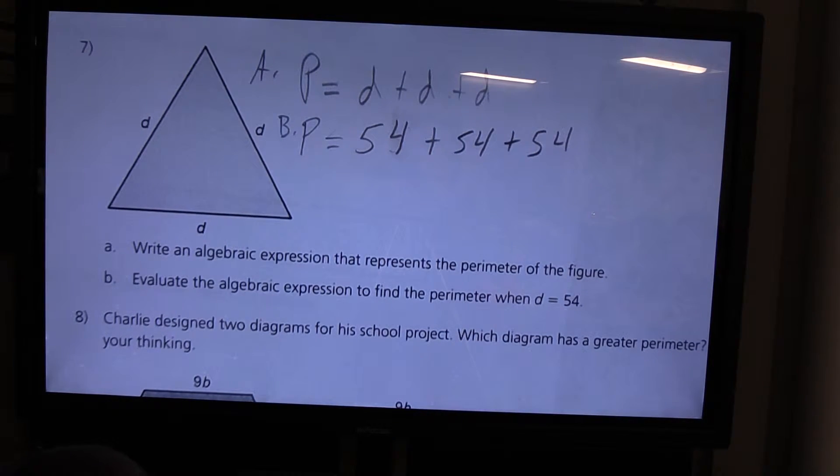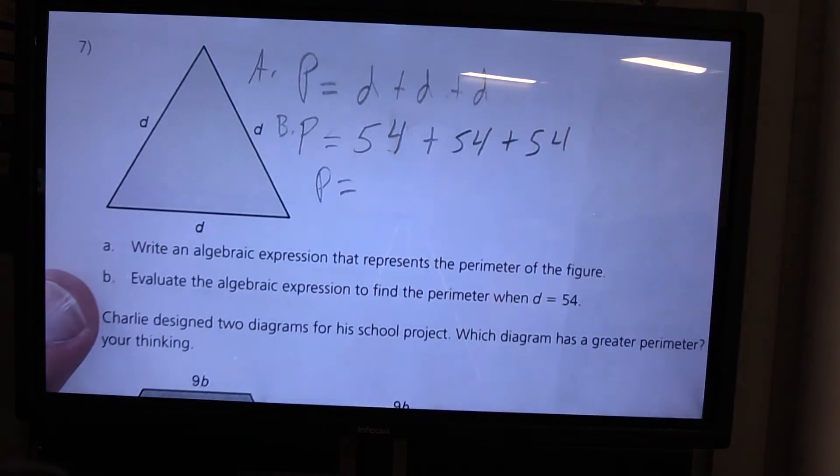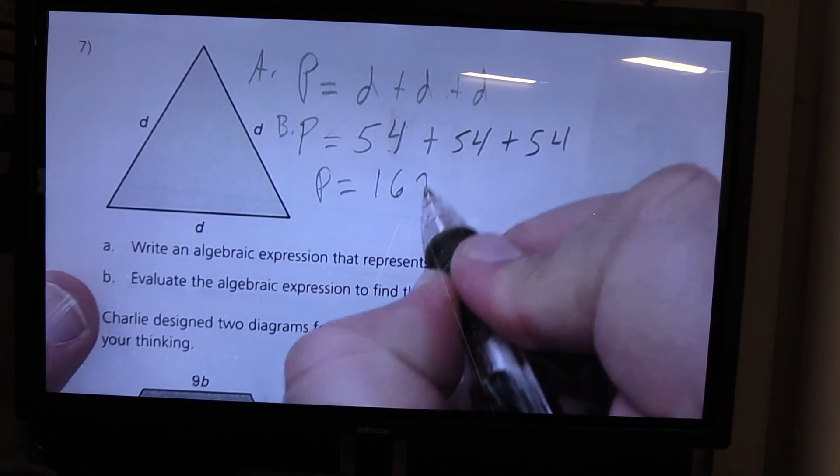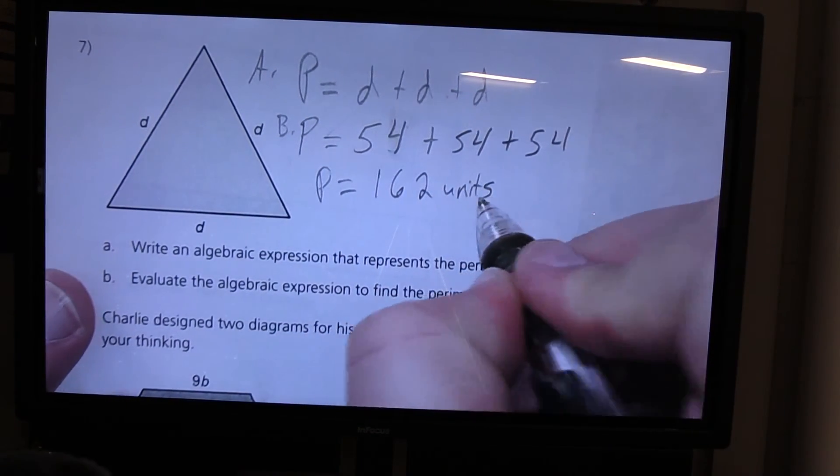Now because of the distributive property of addition, I'm going to break this down to a simpler problem so I can solve it with mental math. I've got three groups of 50 and three groups of four, so I have 150 plus 12 which will give me 162. So I can say that the perimeter of this shape is 162 units.